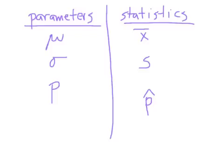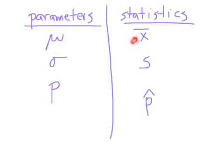There's notation used in statistics where parameters from a population often use Greek letters, like mu and sigma, whereas statistics use English letters, like x-bar and s. For example, mu is the population mean — that's a parameter. X-bar is a sample mean — that's a statistic. Sigma is a population standard deviation — a parameter. S is the standard deviation of a sample — a statistic.